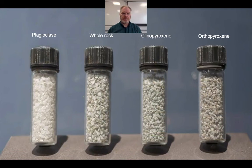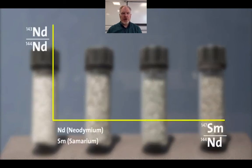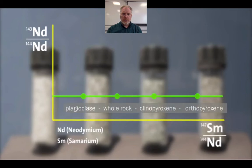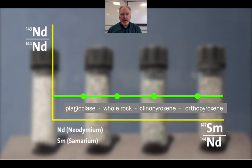Let me try and illustrate. If we have these four samples — plagioclase and our two types of augite, and also the whole rock sample — what we can do is establish the ratio of the two isotopes of Neodymium, and the ratio of Samarium and Neodymium. We can plot those, and when the rock is first formed, we'll see the ratio of these being the same in all of these different minerals. Notice, by the way, that on this graph there are no numbers — we don't tend to worry too much about numbers on this.